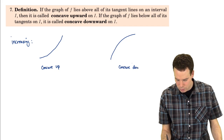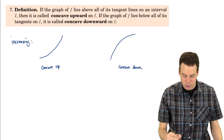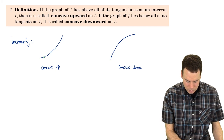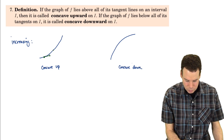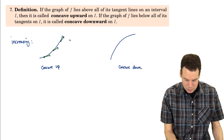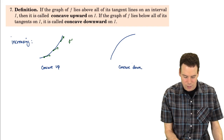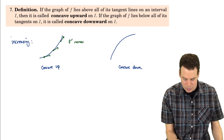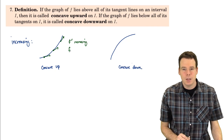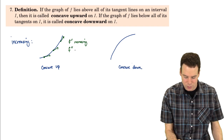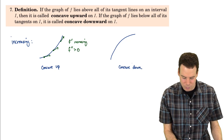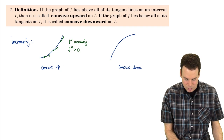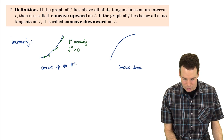We've got concave up and concave down. How do we make this connection with the second derivative? Let's look at the slopes of tangent lines as we move along the concave up curve. What do we notice? The derivatives, which are the slopes of the tangent lines, are increasing in value — the tangent lines are getting steeper and steeper. So f prime is increasing. What does it mean to be increasing? The derivative of it would be positive. The derivative of the derivative is the second derivative, so f double prime is positive.